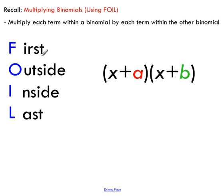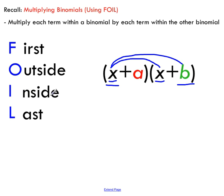The F in FOIL stands for First — I take the first term of each binomial and multiply those two together. The O stands for Outside — the terms on the outside of the expression. So this X and this B would be the outside terms. Next, I'm going to multiply the Inside terms — that's the term on the inside of the first binomial and the x on the inside of the second. Lastly, I take the Last terms — the last term of each binomial — and multiply those two together.